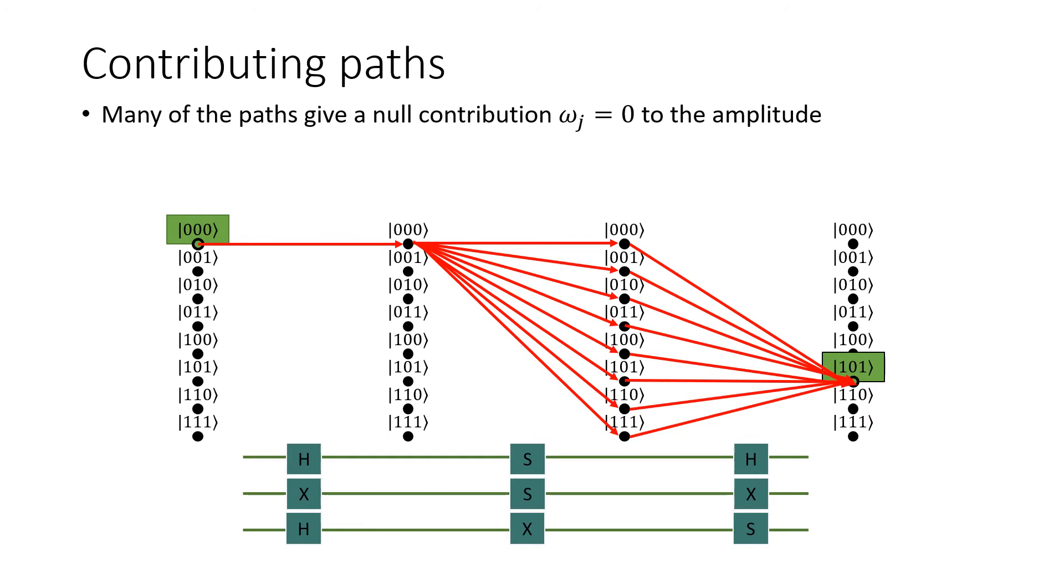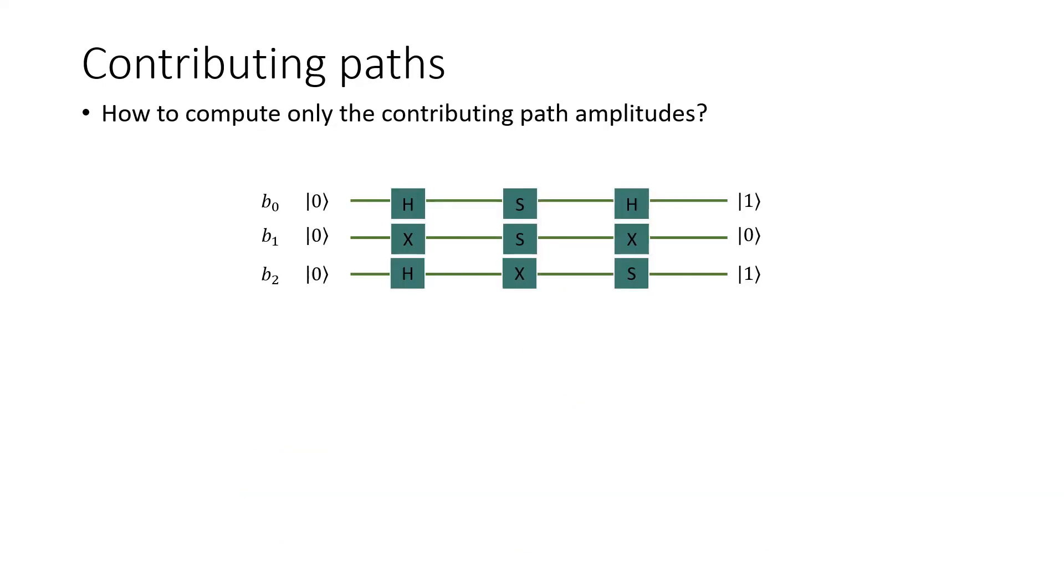Many paths give a null contribution to the sum. We see here that due to the effect of the x gate in the first layer, and since the initial state is all zeros, any path that is obtained connecting the initial state to an intermediate state with 0 on the second qubit will have 0 amplitude.